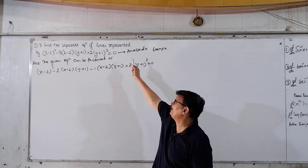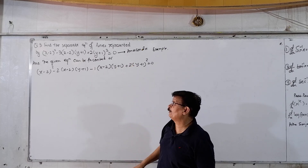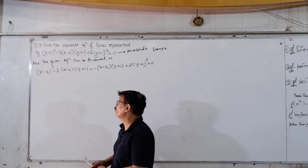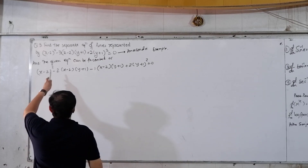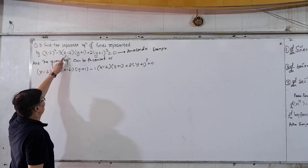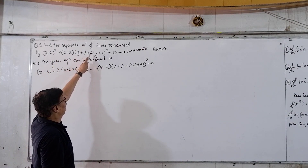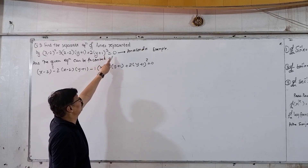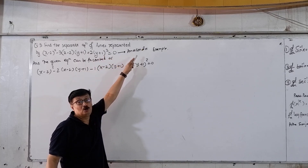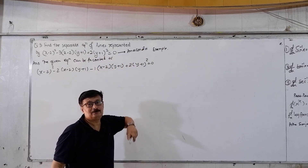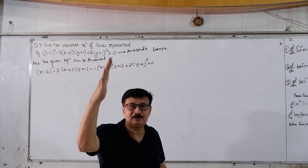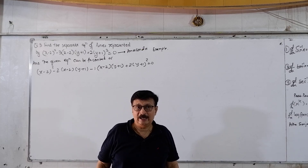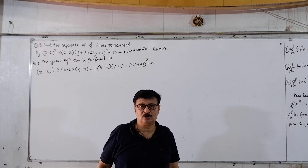The question is: find the separate equation of the lines represented by (x minus 2) whole square minus 3 times (x minus 2)(y plus 1) plus 2 times (y plus 1) whole square equal to 0. We have given the name Anaconda example. So in the exam this type will come — how to solve an Anaconda example.